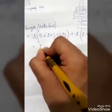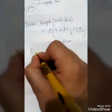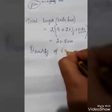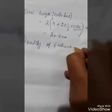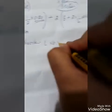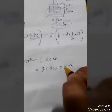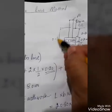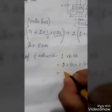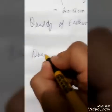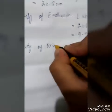Now what will be the quantity of earth work? The quantity of earth work will be length into breadth into height. The total length is 20.80 meters, the breadth is 0.80 meters, and the total height because the excavation is done up to the ground level will be 0.2 plus 0.2 plus 0.2, which equals 0.6 meters. So the total earth work will be 9.98 cubic meters. Now we will find the quantity of brick work.